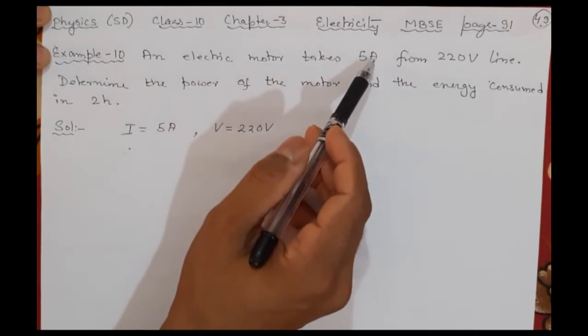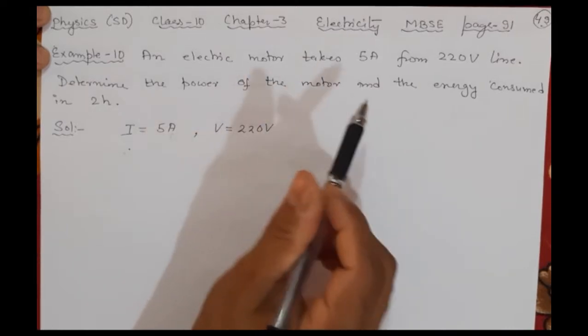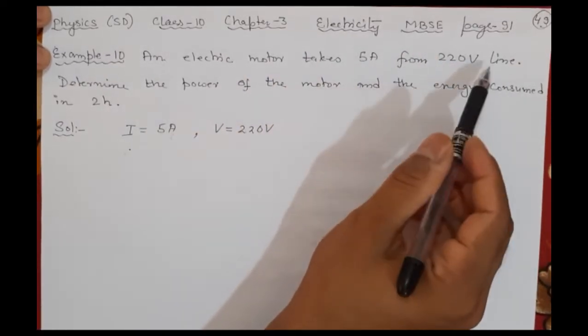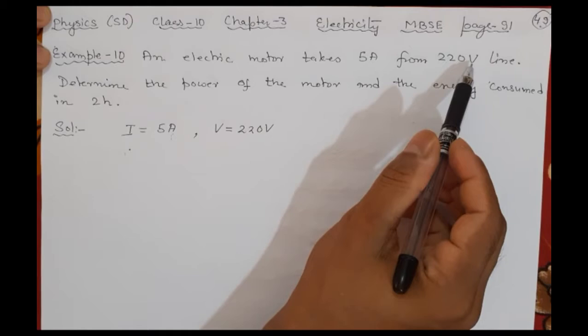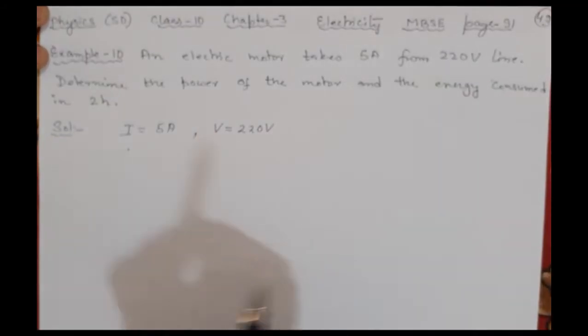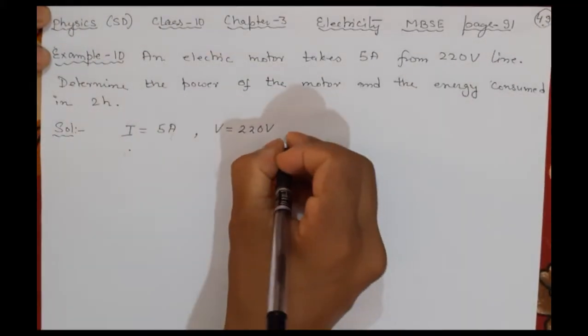Current means ampere - you can understand from the unit it is current, even if nothing is mentioned. 220 volts - nothing written about voltage or potential difference, but I understand from the unit that it is the voltage.